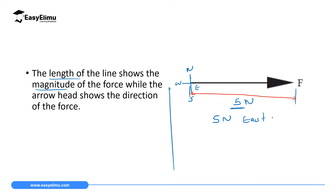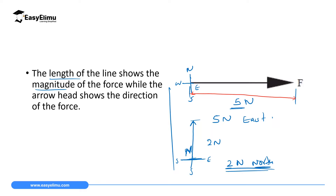For another example, if you have a different line and you are required to find its magnitude, take a ruler and measure the length. Let's say you get two newtons. Then at the beginning of the force, draw your compass direction — north, south, east, west. In this case the force is moving northwards, so the answer is two newtons north. Direction is very important because we said a force has both magnitude and direction.